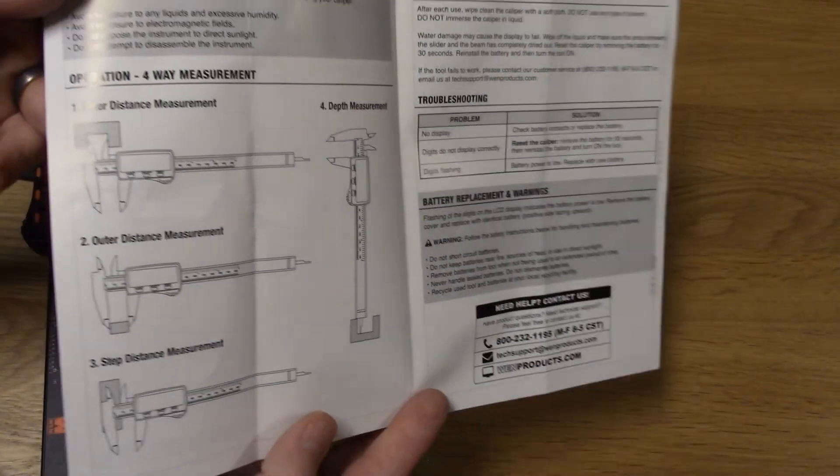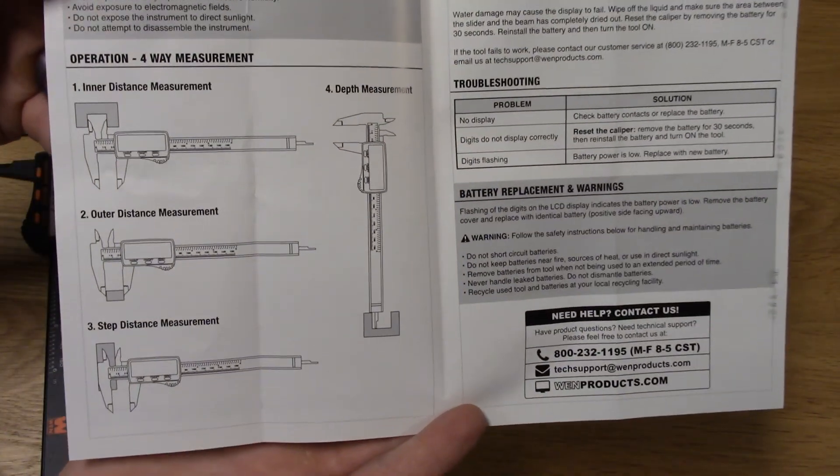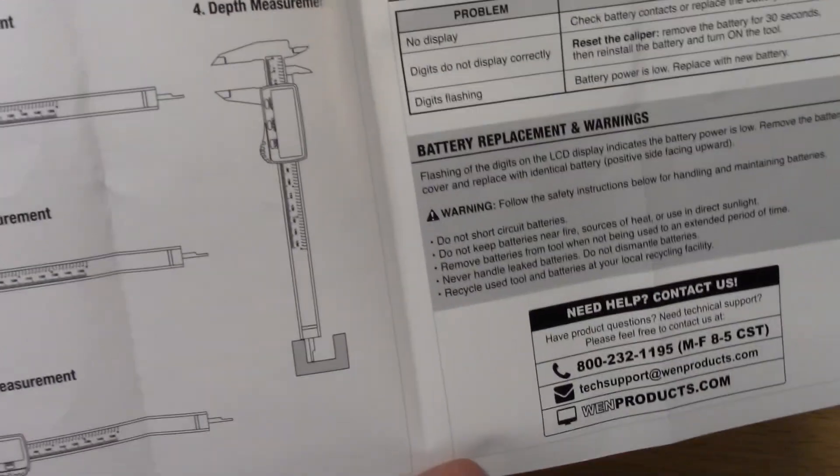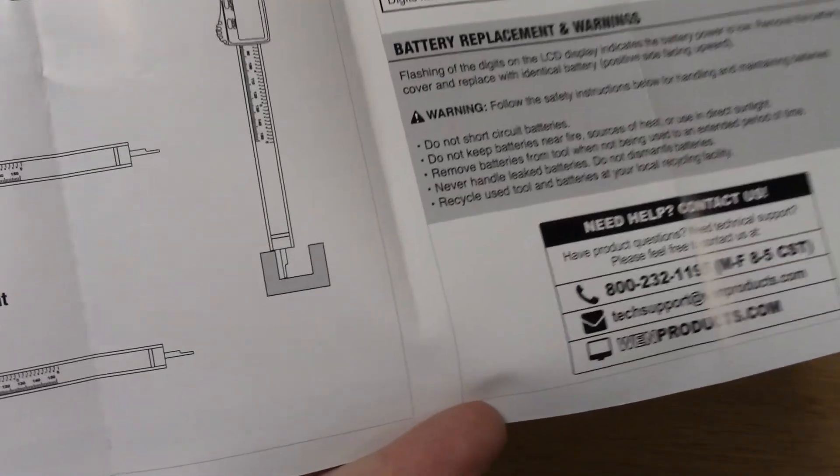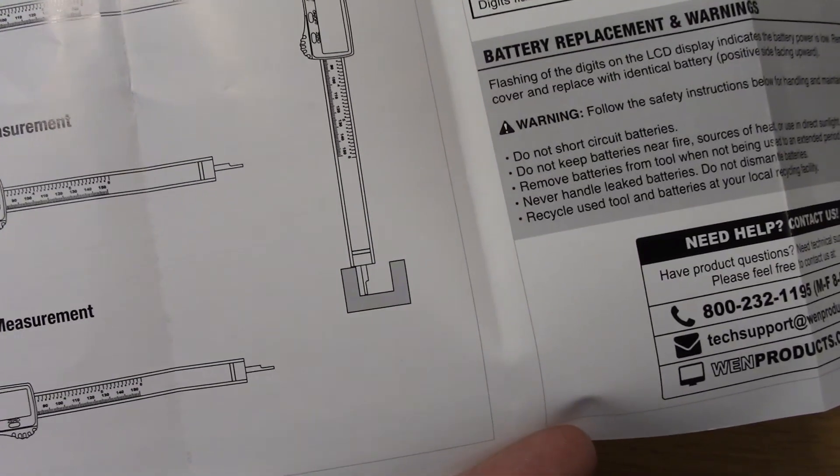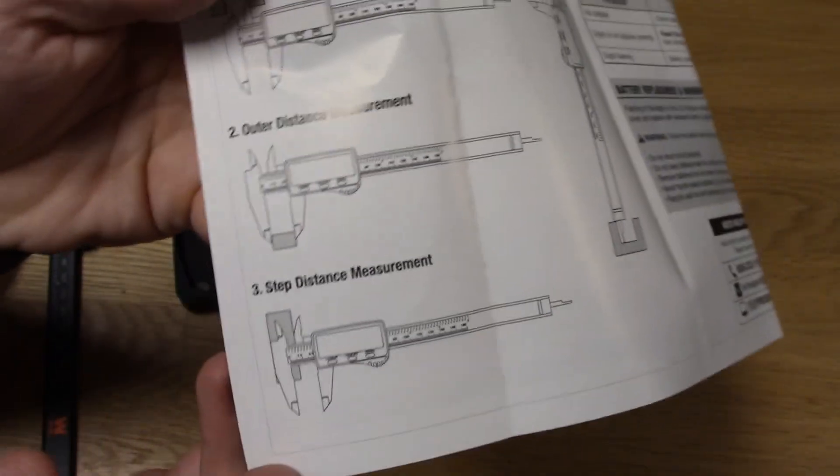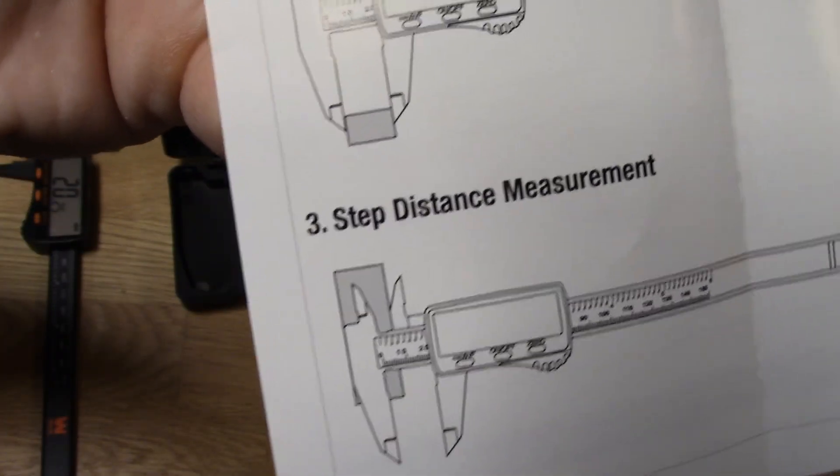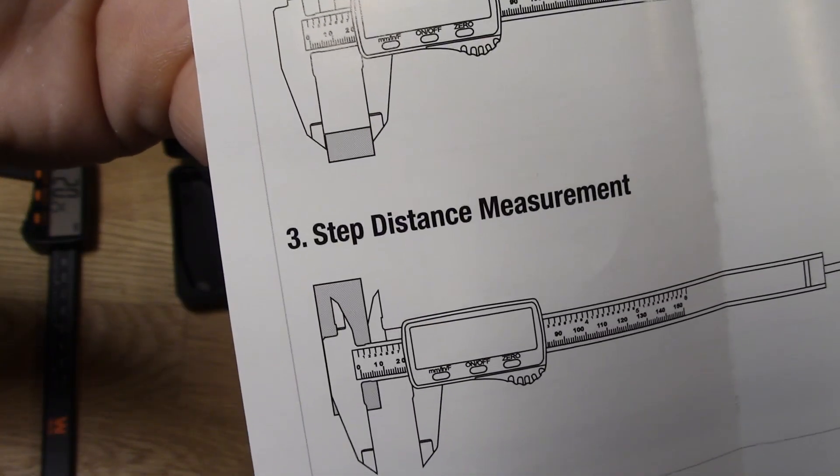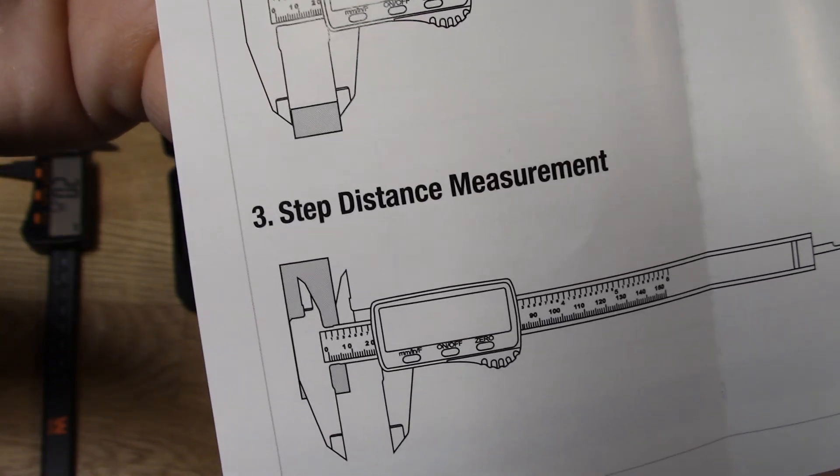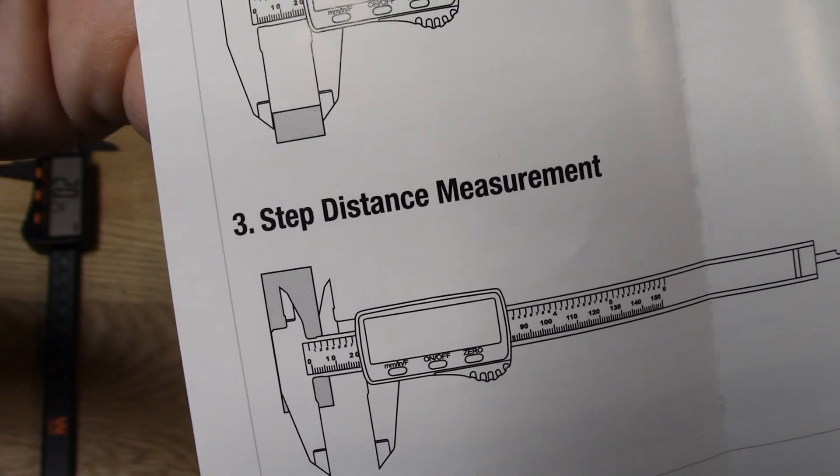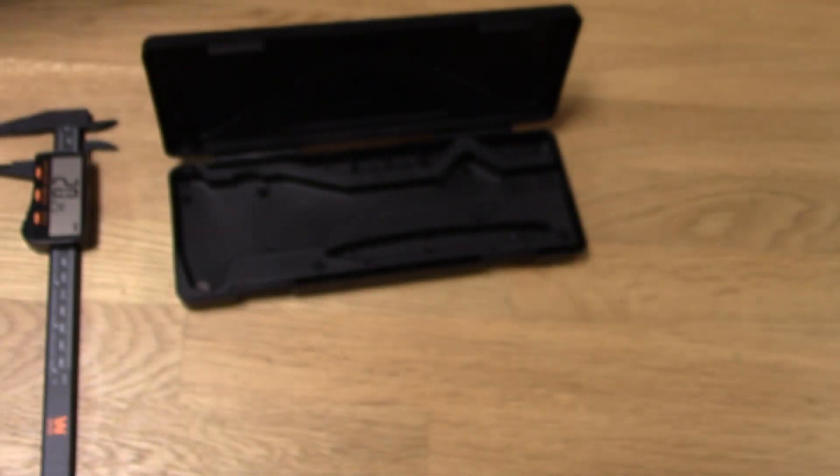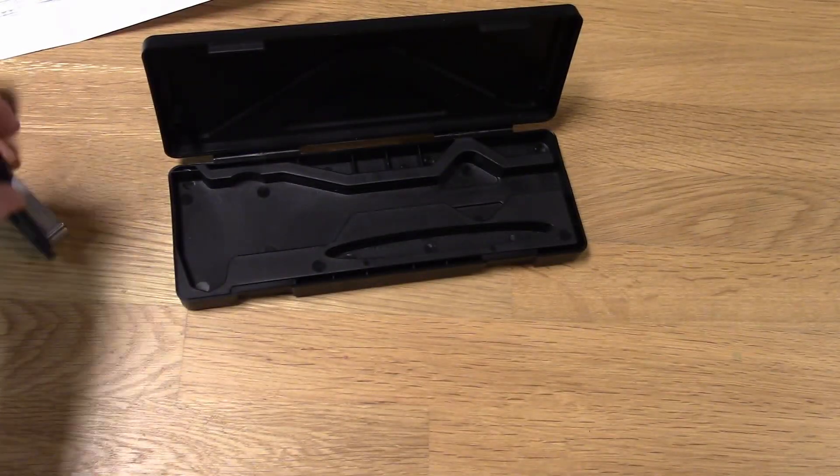And reading this manual, I realized that I've been missing out on some features of a caliper for a long time. You can actually do a depth measurement with that little thing that sticks out at the end that pokes you in the pocket. And you can do a step distance measurement by using the pawl there and the head to measure an object. So mine is kind of blown right now.